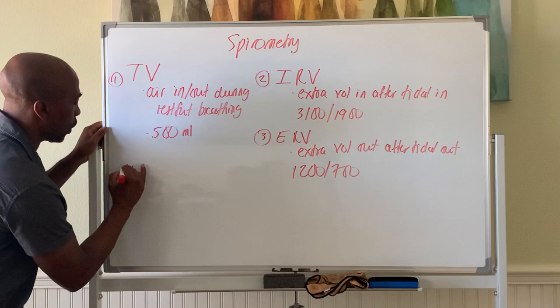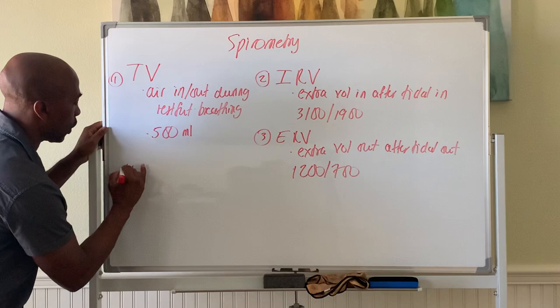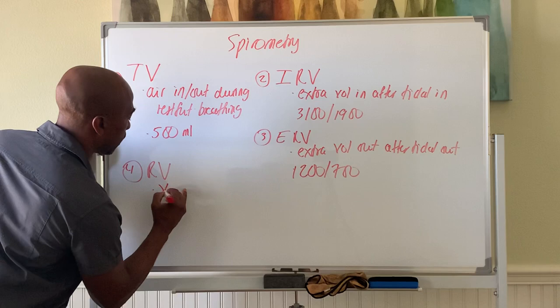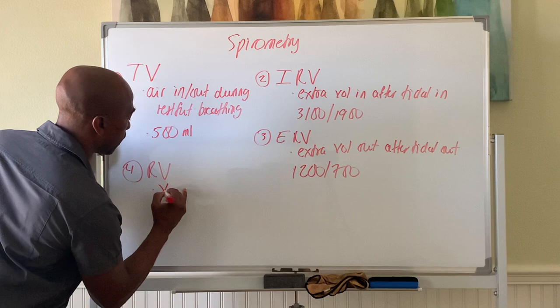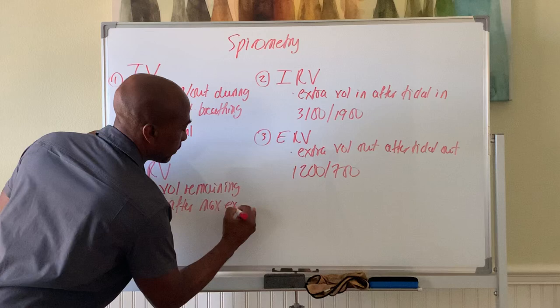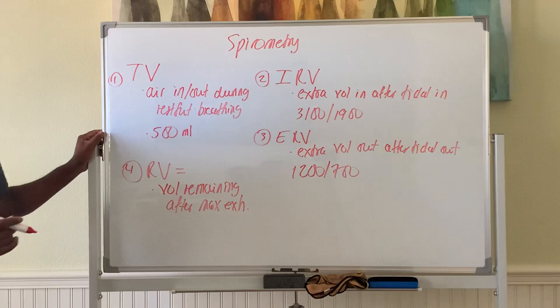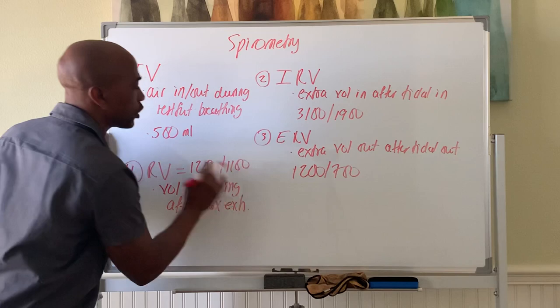The next one is RV — residual volume. So when you exhale even fully and empty your lungs, the lungs are never empty. There's always air left behind; let's call it your residual volume. This is the volume remaining after maximal exhalation. That's equal to around 1,200 mLs for males and 1,100 mLs for females, all in milliliters in terms of units.